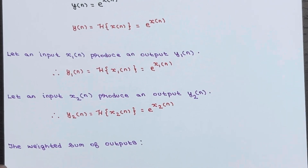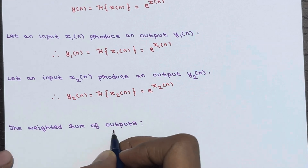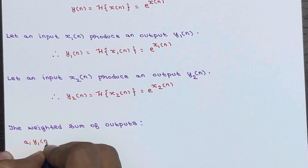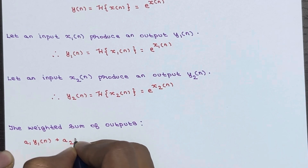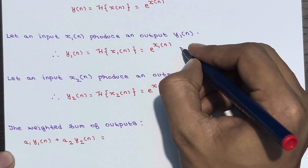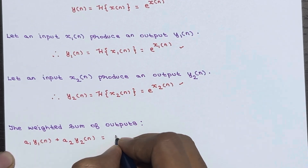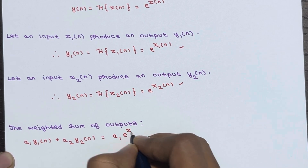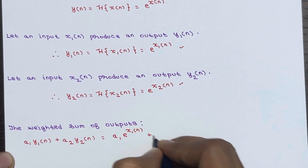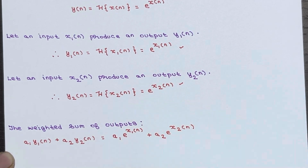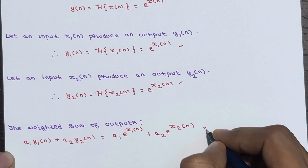Now we have to calculate the weighted sum of outputs. The weighted sum of outputs is nothing but a1·y1(n) + a2·y2(n). We have already calculated y1(n) and y2(n), so putting them in: the equation becomes a1·e^x1(n) + a2·e^x2(n). Remember this — this is the weighted sum of outputs.